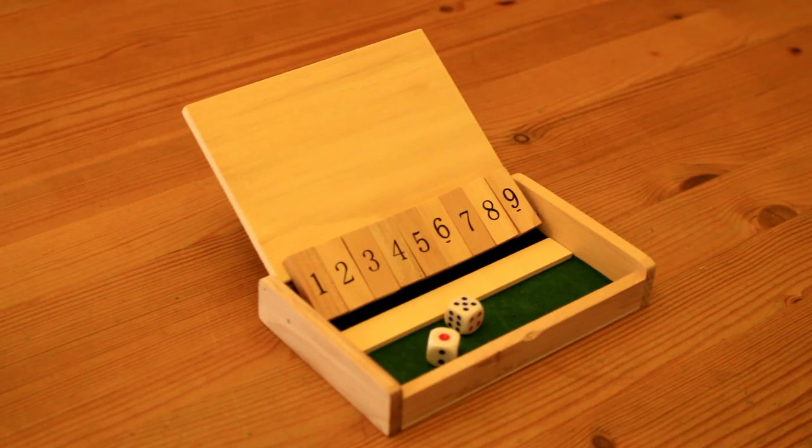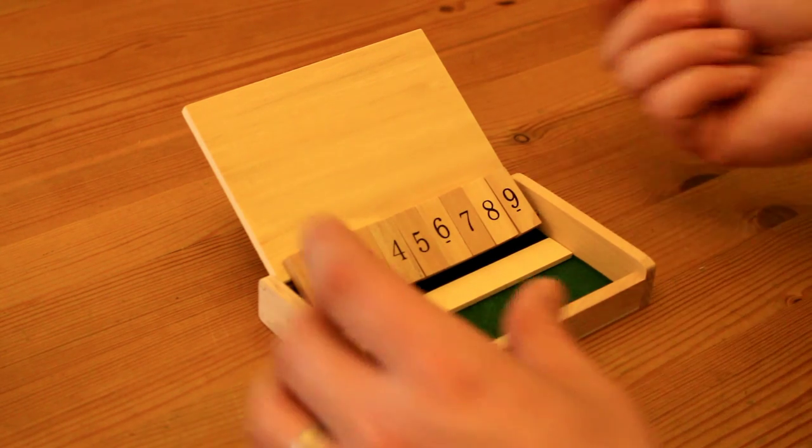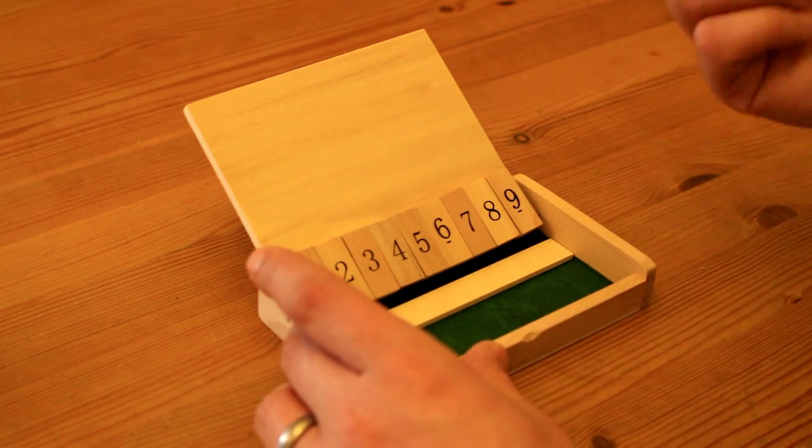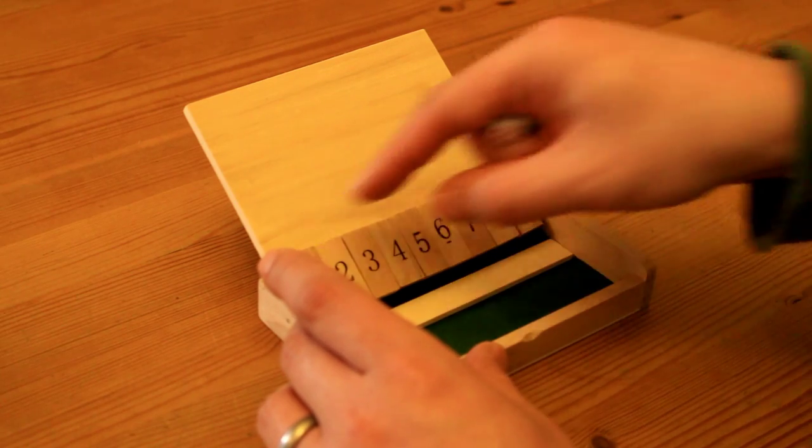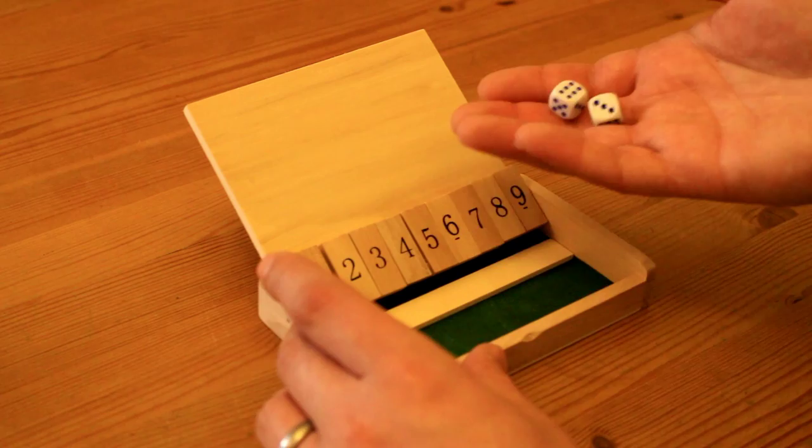Shut the Box is what I'd class as a traditional pub game, although it is great for kids because there's a lot of addition involved in mental maths. The game consists of a wooden box, tabs numbered one to nine, and two dice.